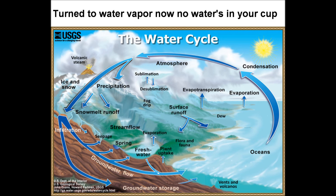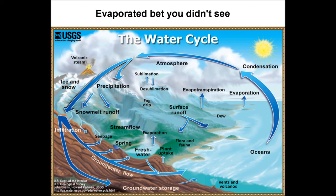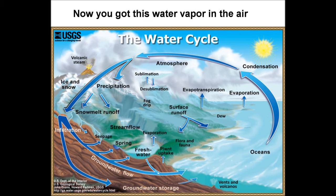Sun got the water heating up, turn to water vapor — now no water's in your cup, evaporated, bet you didn't see. Transpiration is evaporation from a tree. Now you got this water vapor in the air.